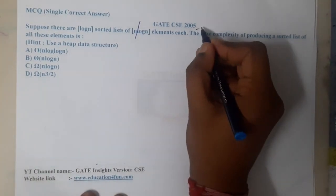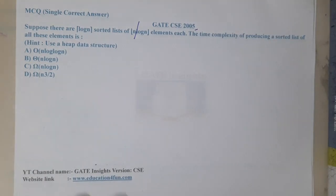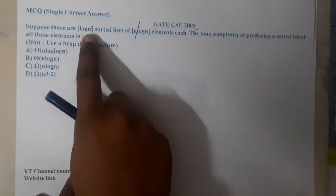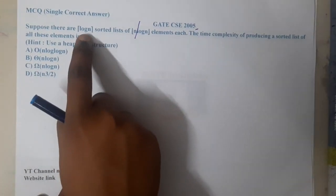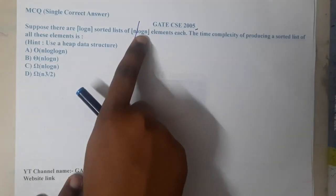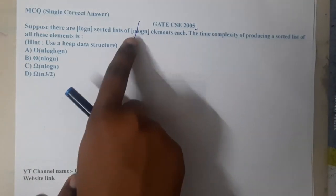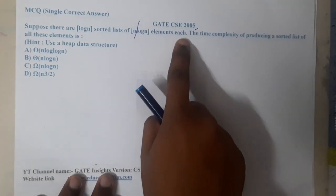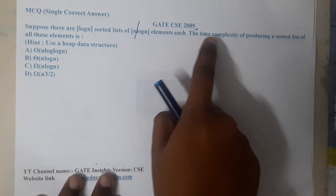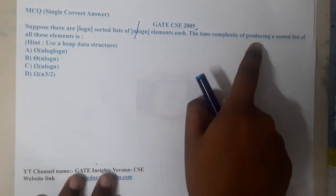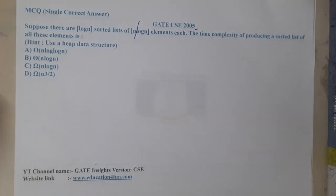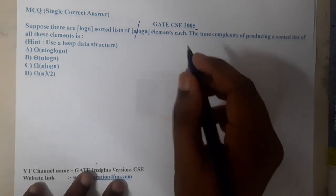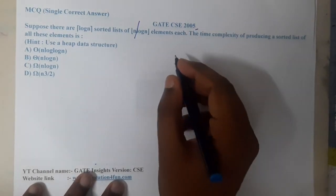This question belongs to GATE CSE 2005. The question is: suppose there are log n sorted lists, each having n/log n elements. The task is to find the time complexity of producing a sorted list of all these elements.